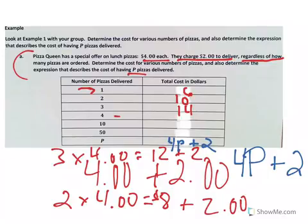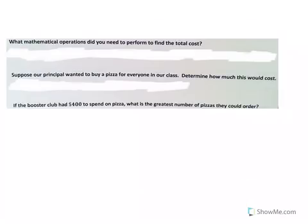So if we have 4, 4 times 4 is 16, plus 2, that's going to cost you 18 dollars to have 4 pizzas delivered. 10 times 4 is 40, plus 2 is going to give us 42. 50 times 4 is going to be 200, plus 2 dollar delivery charge is going to give you 202 dollars. So let's answer a couple questions.